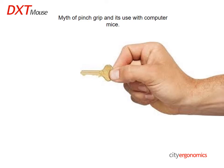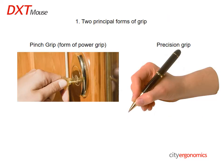This short presentation explains the myth concerning the pinch grip and its use with computer mice. The two principal forms of grip are pinch and precision, and there are three essential differences between them.